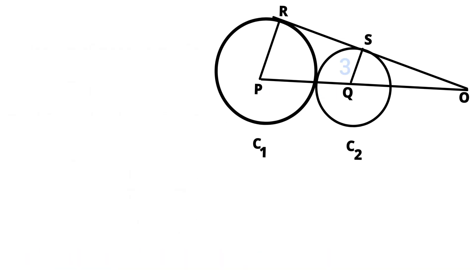Now we have the radius of the second circle, that is, 3 centimeters. With the help of this and length of OQ, let's try to find out the length of SO. In right angle triangle OSQ, with the help of Pythagoras theorem, we can write